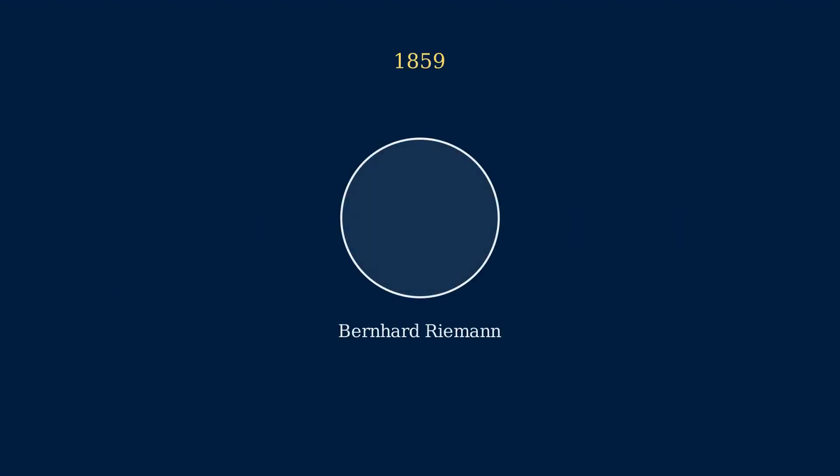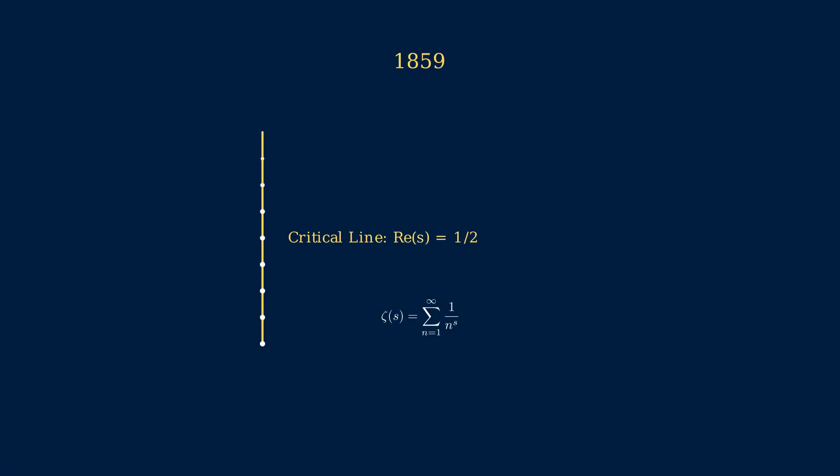In 1859, Bernhard Riemann introduced an idea that linked prime numbers, the building blocks of arithmetic, to a mysterious function called the zeta function. He made a bold conjecture. Every non-trivial zero of this function lies on a single vertical line at one half in the complex plane. No one has been able to prove or disprove it, yet.